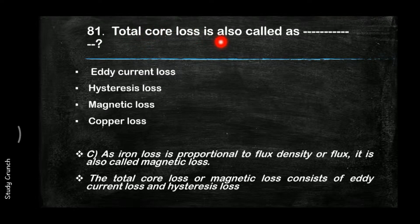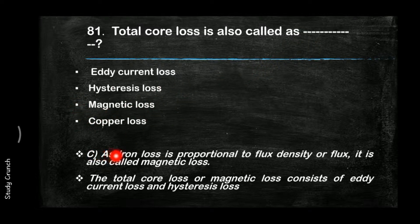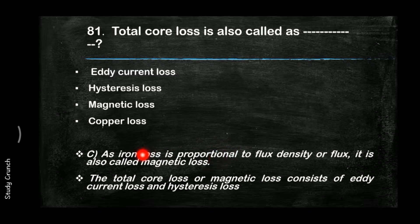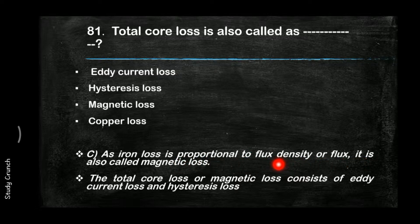Total core loss is also called as magnetic loss. As we know that iron loss is proportional to flux density or flux, it is also called magnetic loss. The total core loss or magnetic loss consists of eddy current loss as well as hysteresis loss.